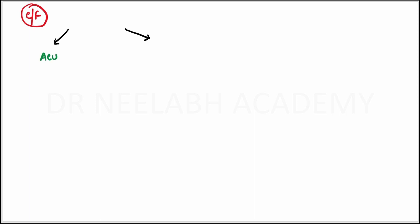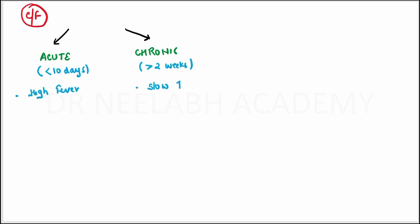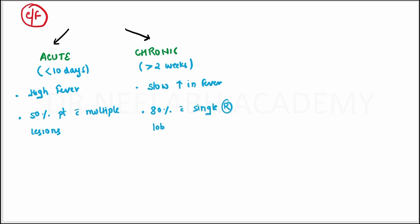Next we come to the clinical features. It may present in two forms: acute or chronic. Acute is generally less than 10 days and chronic is more than 2 weeks. In the acute form there is high-grade fever, whereas in the chronic form there is slow onset of fever. In the acute form, 50% of patients present with multiple lesions, and in the chronic form, 80% of patients present with a single right lobe lesion.